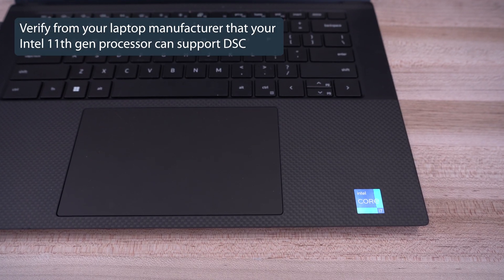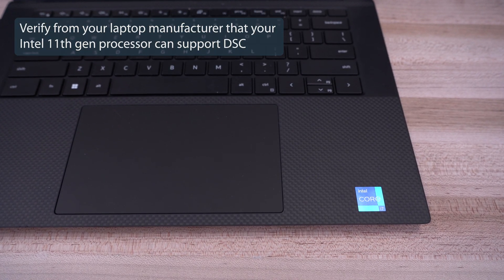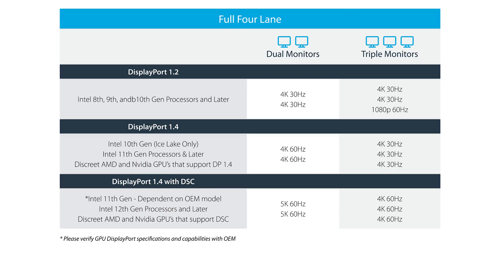For Intel 11th Gen or later processors, dual 5K 60Hz is supported using Display Stream Compression, also known as DSC.